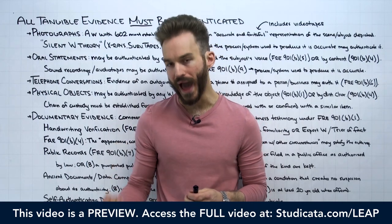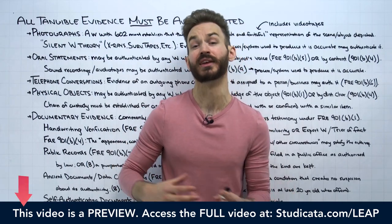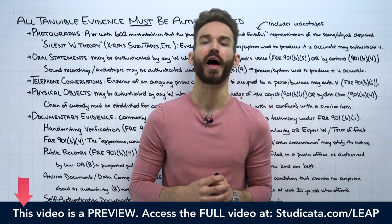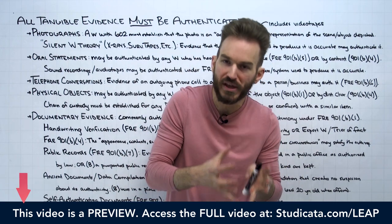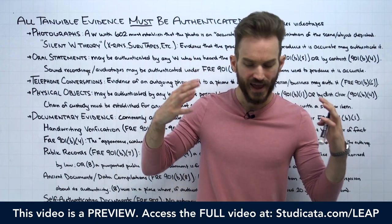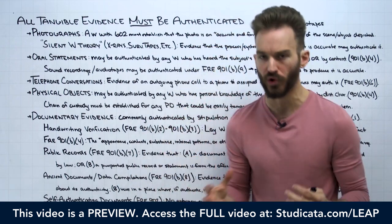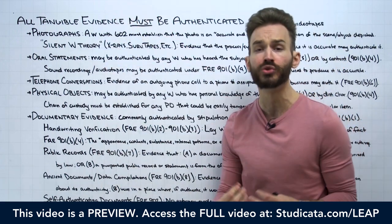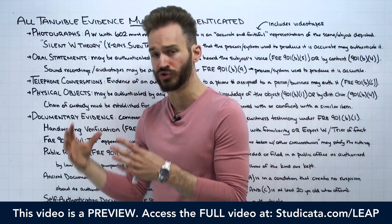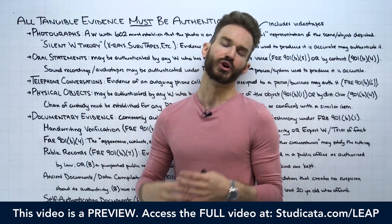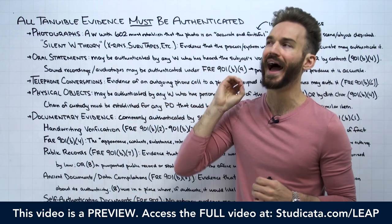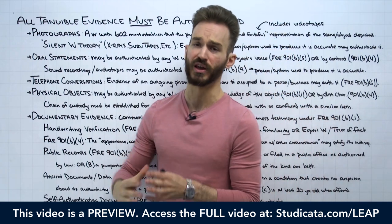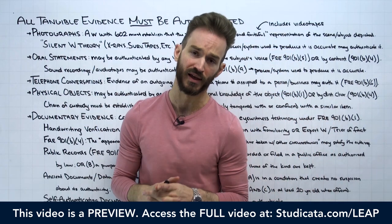In this lesson, we're moving past our discussion of witnesses and testimonial evidence into our discussion of tangible evidence — evidence that the jury can hold in their hands. Anytime we're thinking about tangible evidence, we have to start with authentication under Rules 901 through 902 of the Federal Rules of Evidence. I like to start with a very simple example to illustrate how this all plays out.